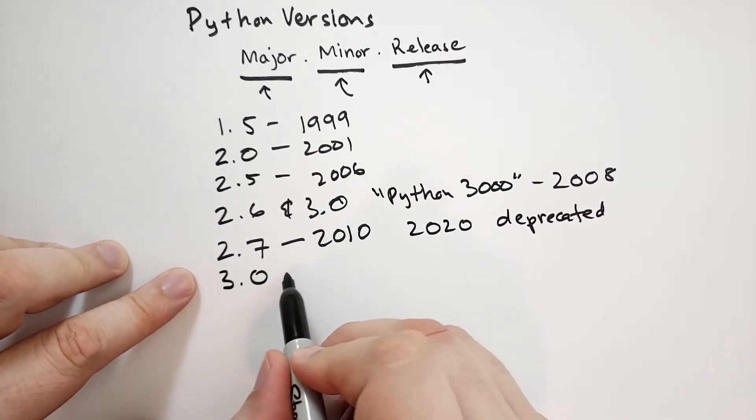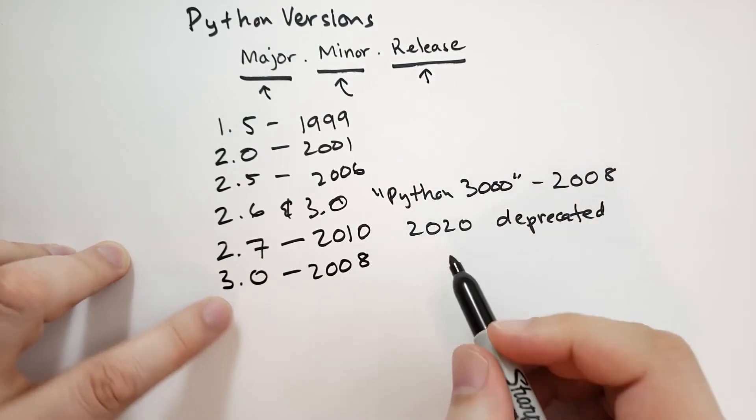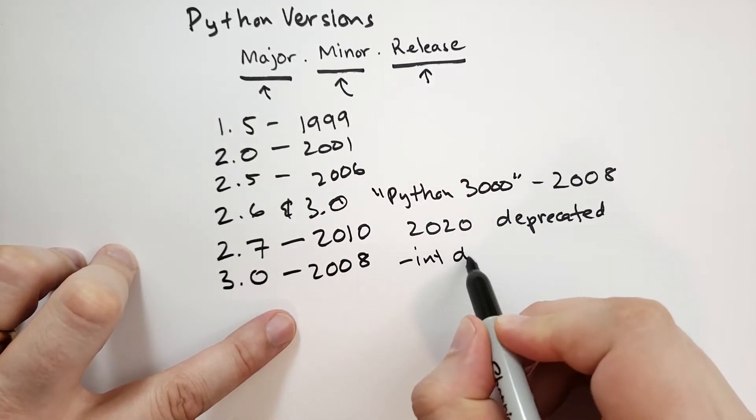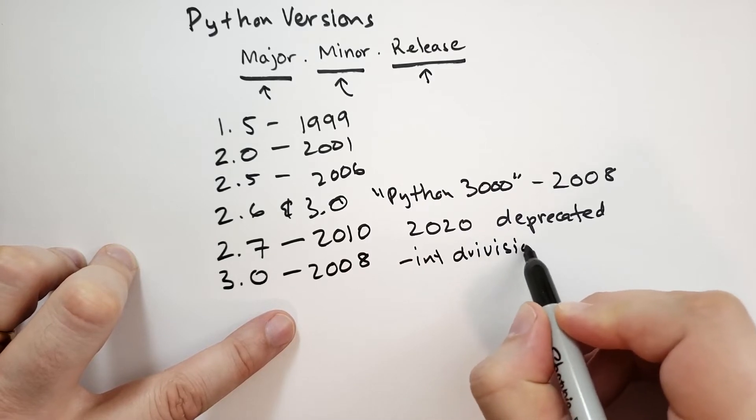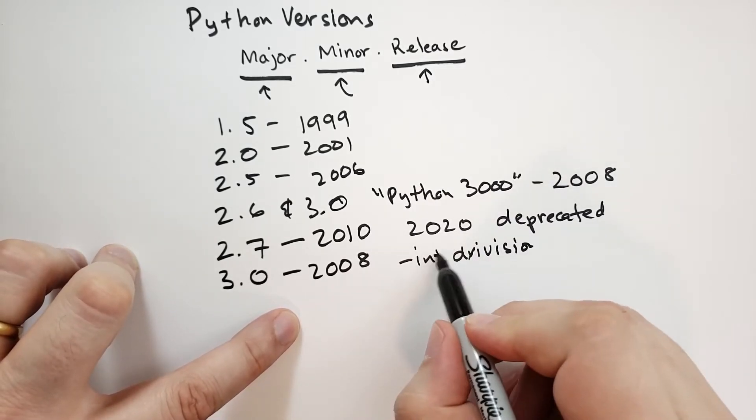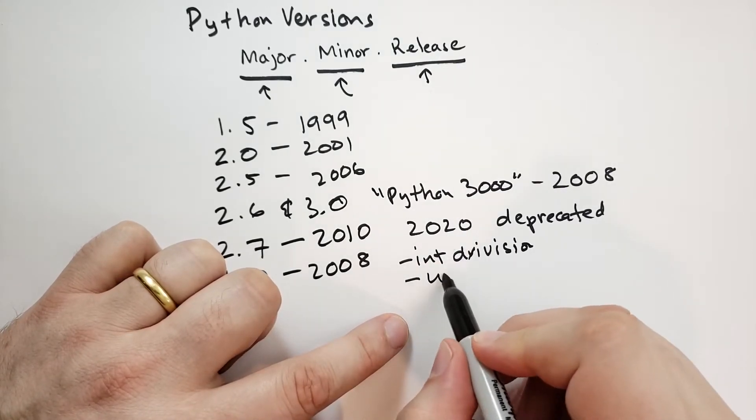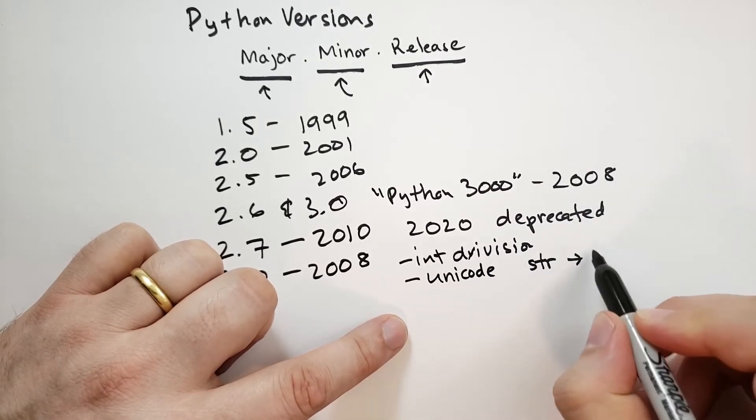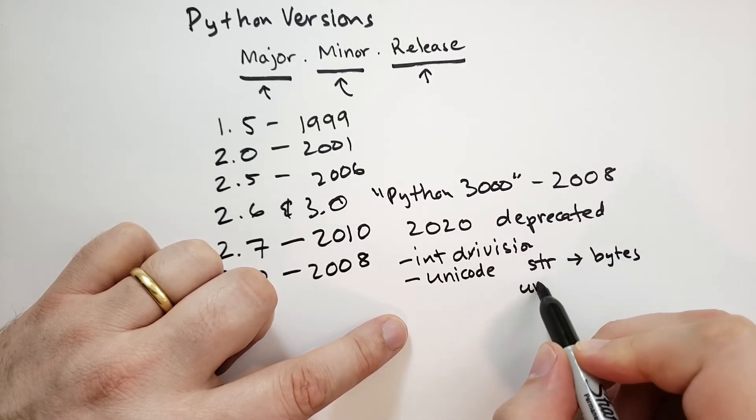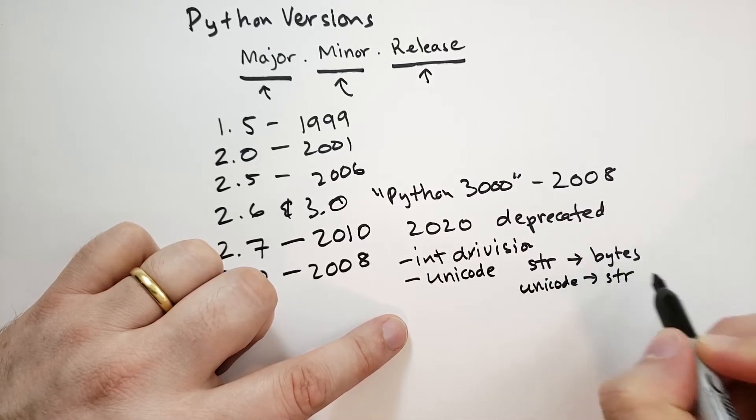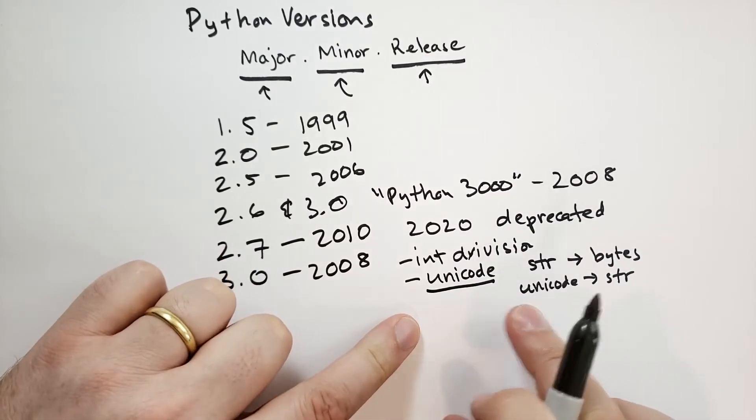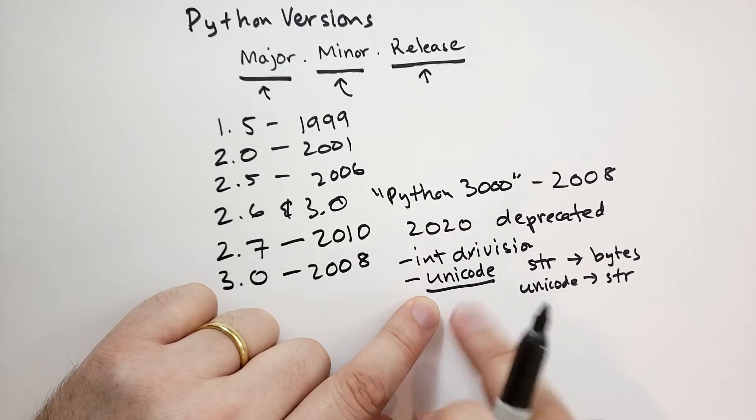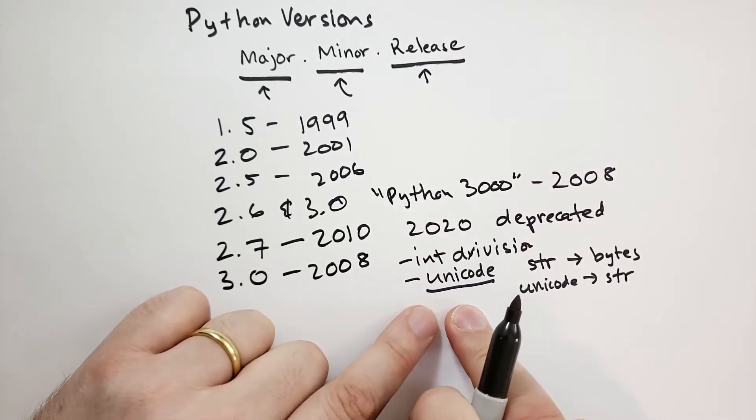3.0 came out the same time, 2008. And there were some major changes that had significant impact. There was integer division, which we'll cover in the syntax, if I can spell division correctly. Then there was also the Unicode changes, so Unicode is now string. So basically, what was the string type in Python now became the bytes type. And what was Unicode now became the string type. And this turned out to be a bigger change than anybody anticipated. It's a good change, but it was very painful to go through this process, and if you're in the process of upgrading 2.7 to 3.0, this is what you're going to spend the majority of your time fixing. It's not very difficult to do, but it does take some time to get everything right.